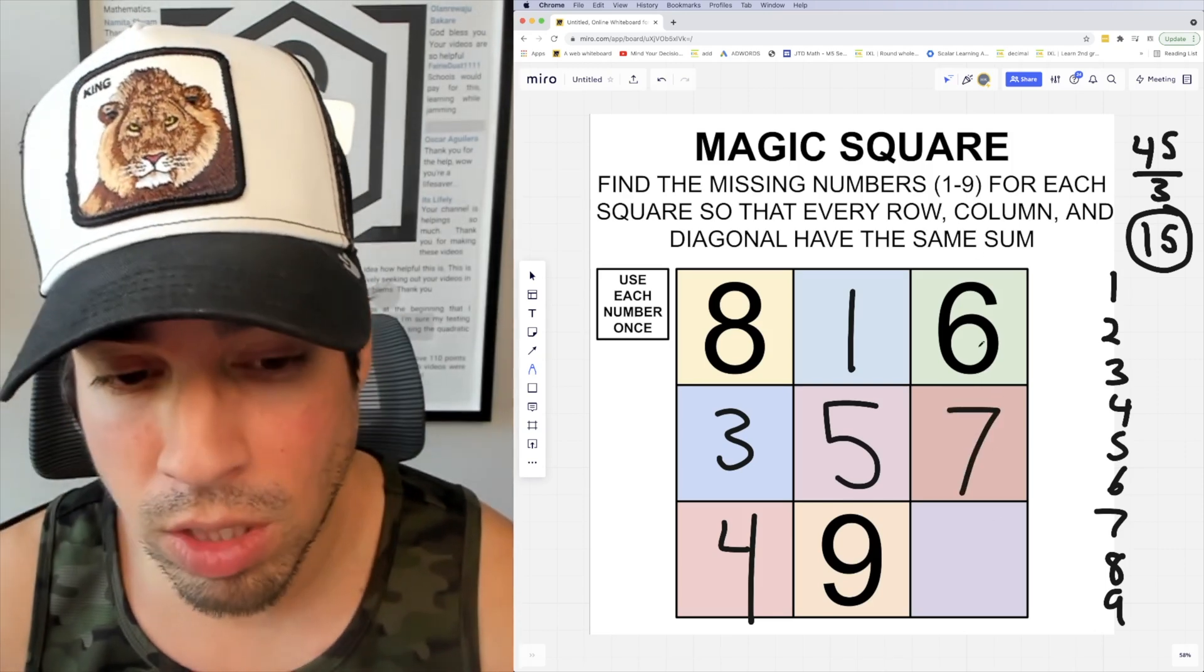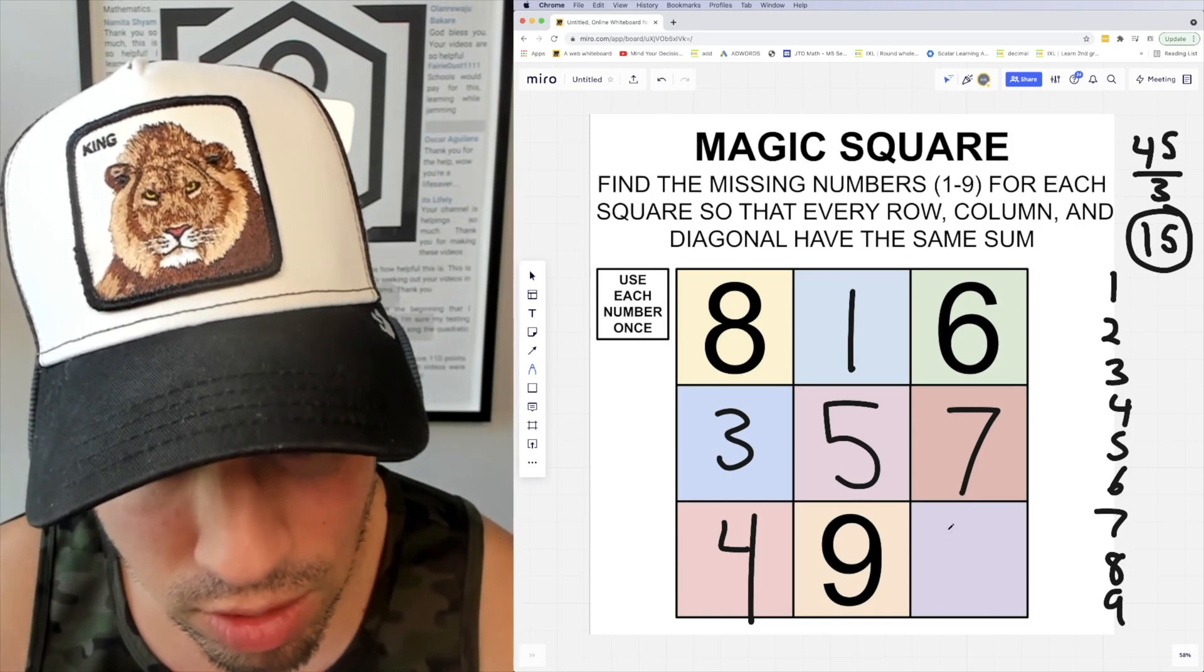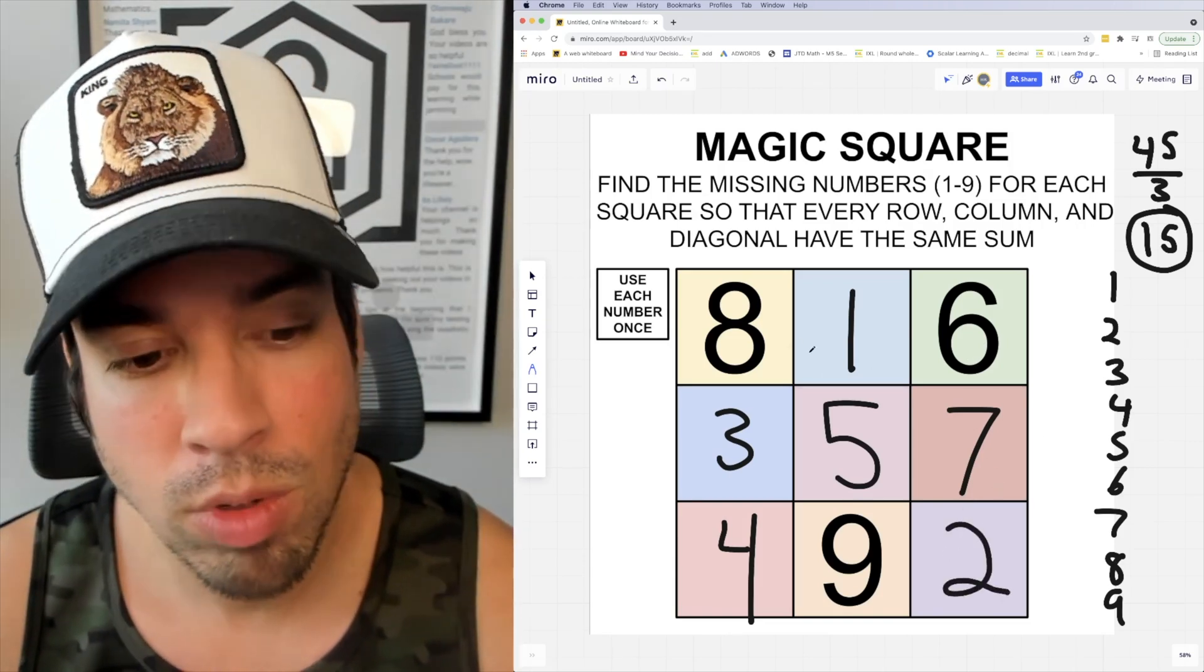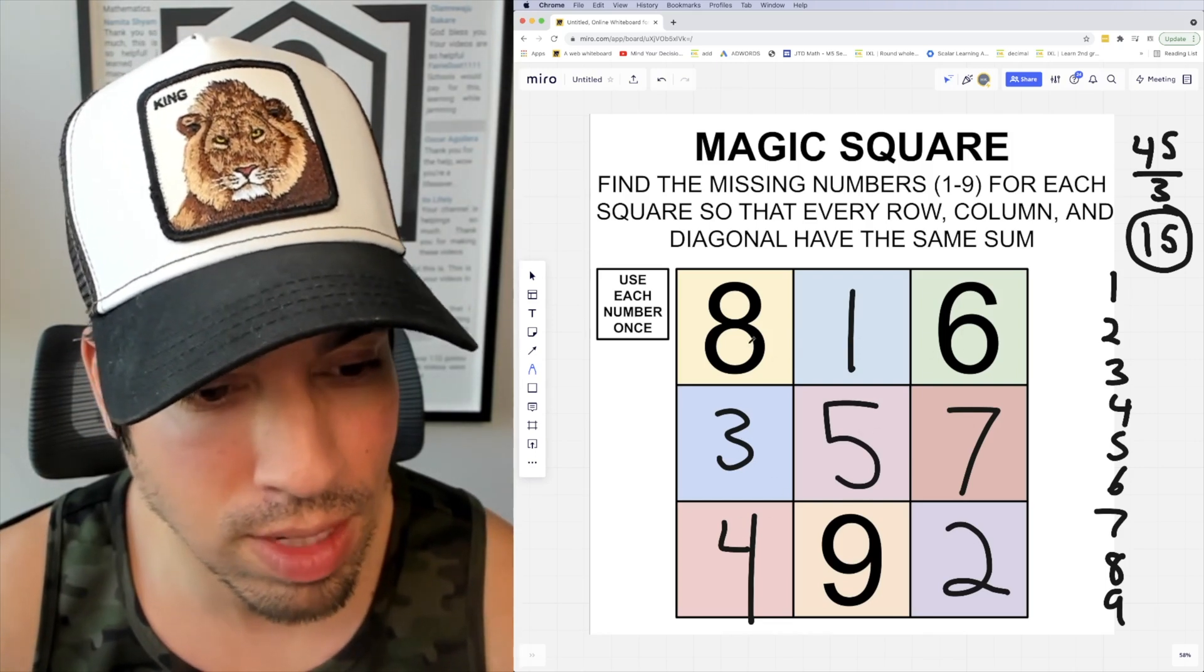And last but not least, we're going to go vertically. Six plus seven is 13, so I'm missing a two to make 15. And now you can see we've used every number: one, two, three, four, five, six, seven, eight, and nine.